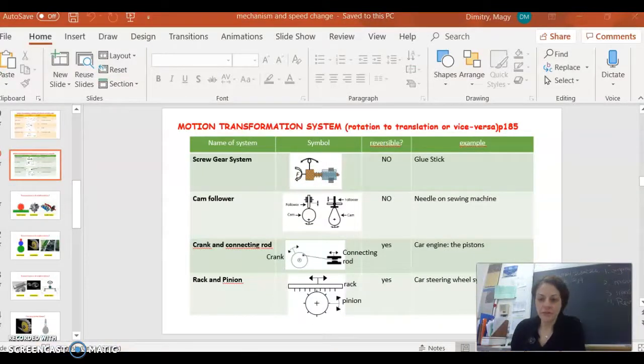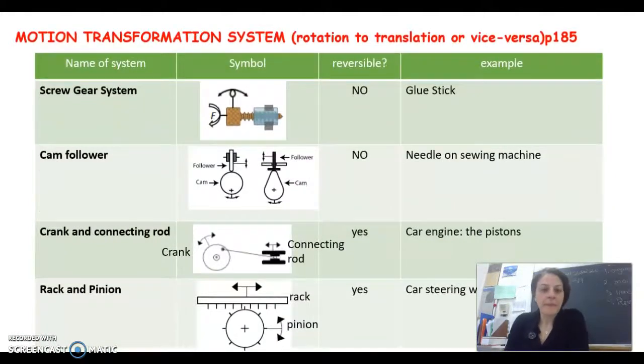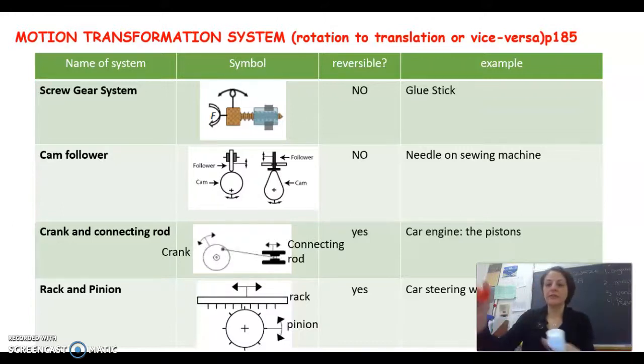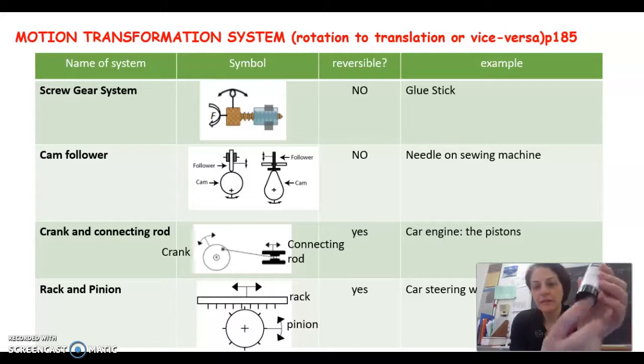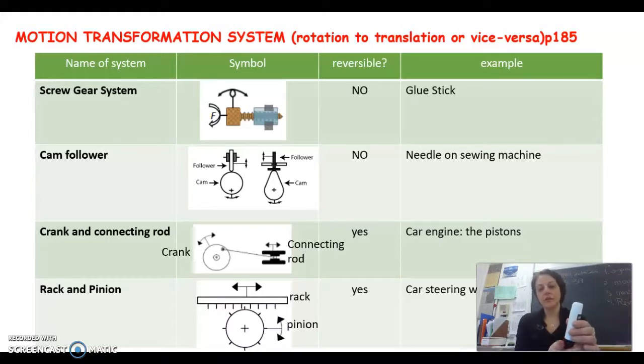All righty, so now we're on to transformation systems. As you can see here, there's going to be a change in the motion. So the differences we go from rotation to translation or vice versa. As you can see here we have this screw gear system that will turn and we have a helical motion of the screw, the bolt. And the example for that one is the glue stick. Because inside a glue stick you actually, if you can see this, you actually, well you turn it, you have the screw inside. So that's the rotational movement that you see there, and then inside there's a screw that will push the glue to the top.